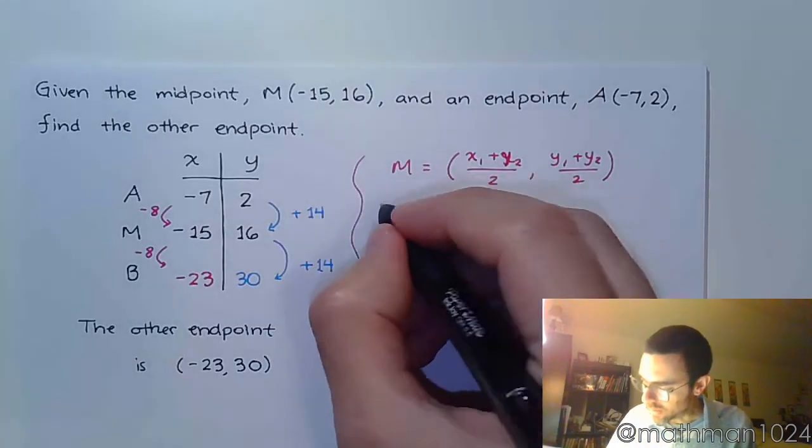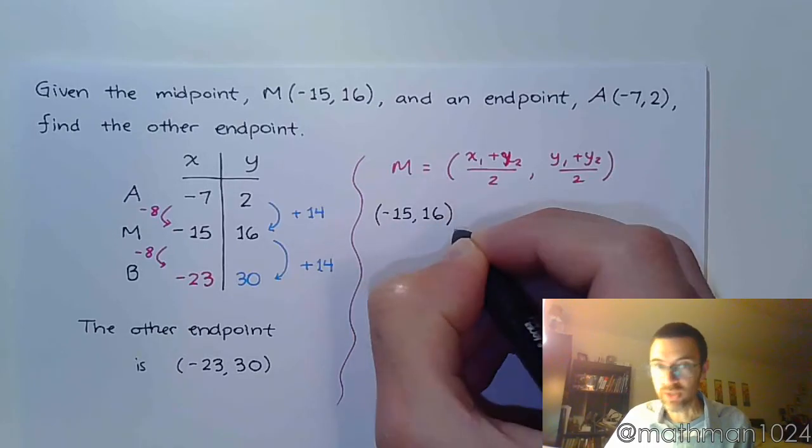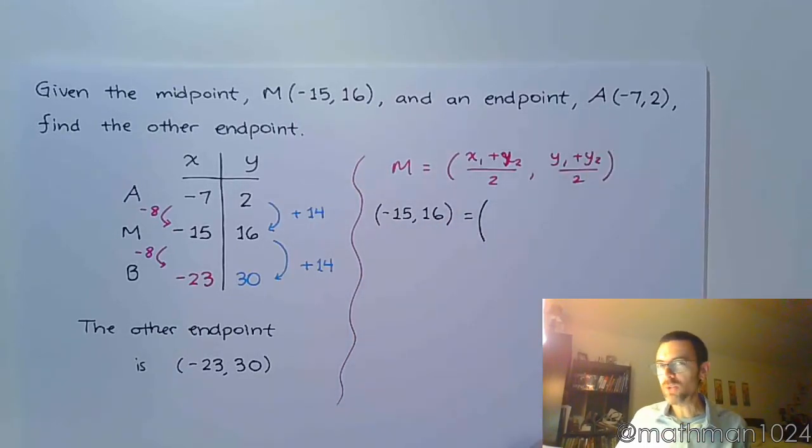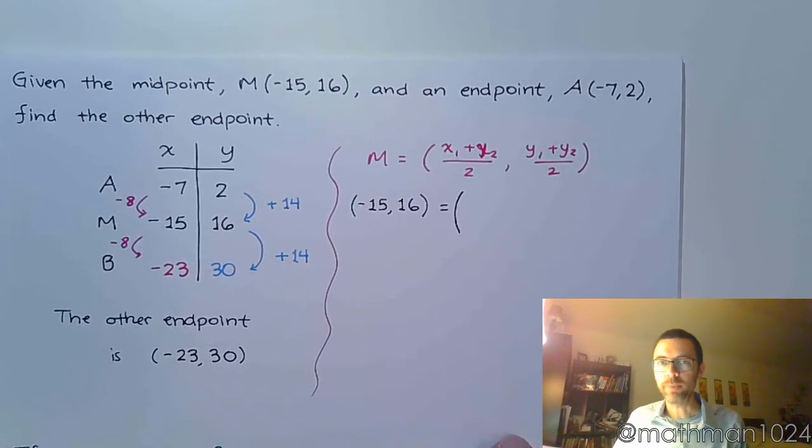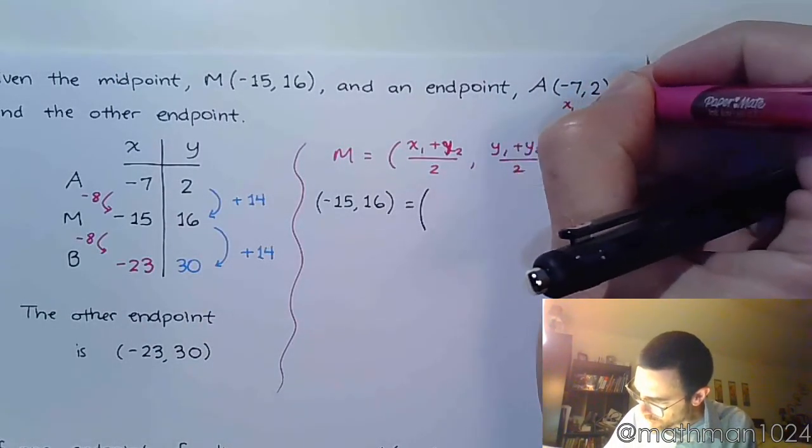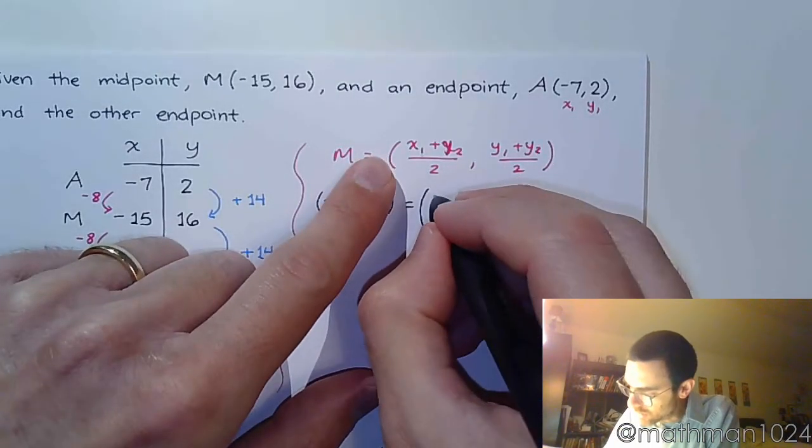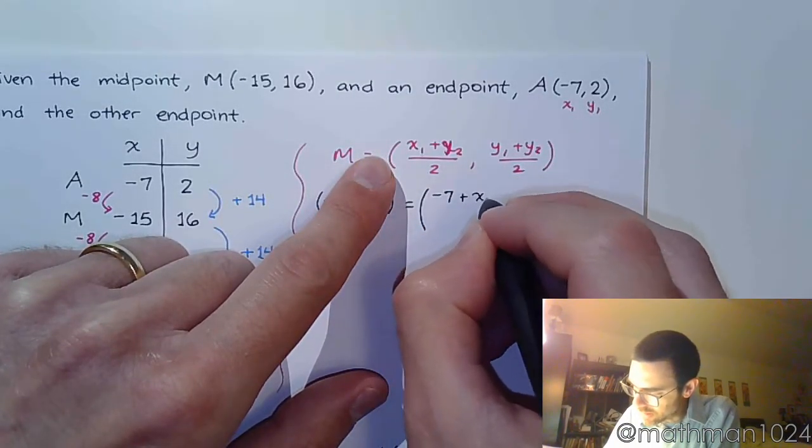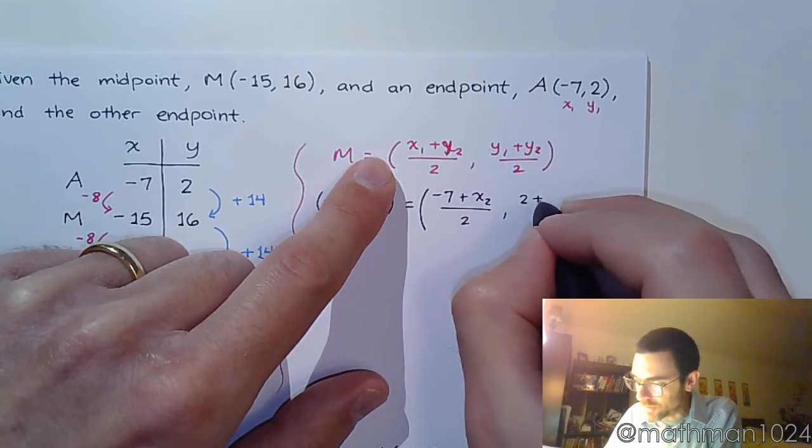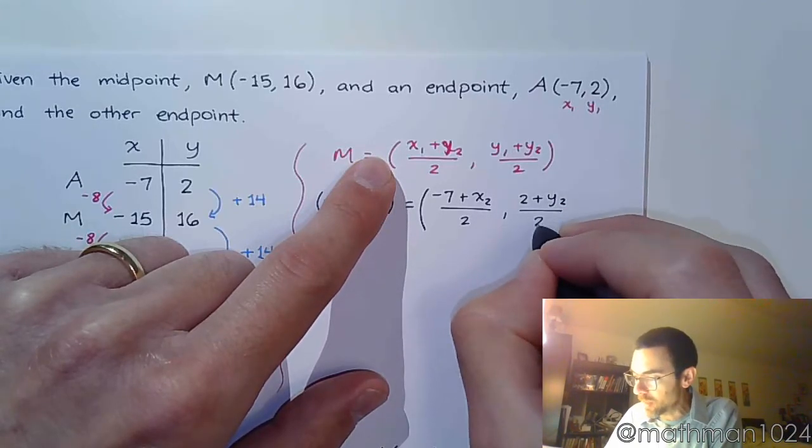So here, we know that the midpoint is negative 15 comma 16. And for the ordered pair, here's what we don't know. We don't know that second x or the second y. And so we write it like this. We say that this is x1, y1. So x1 is negative 7 plus x2 divided by 2. And then y1 is 2 plus that other ordered pair that we're going to find, divided by 2.